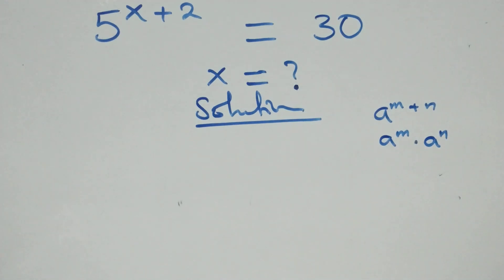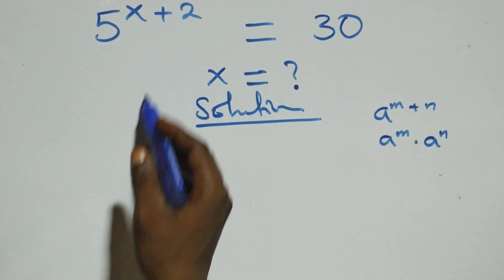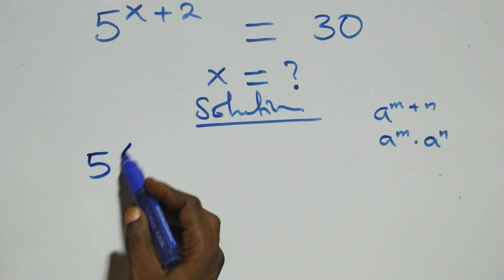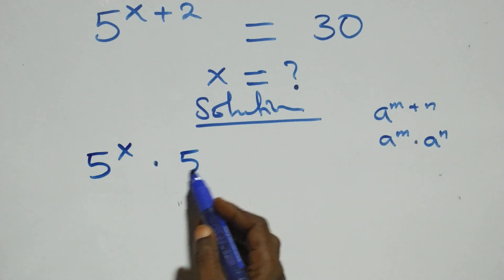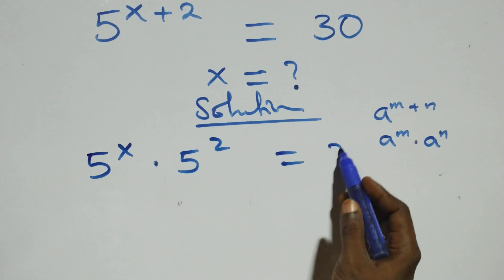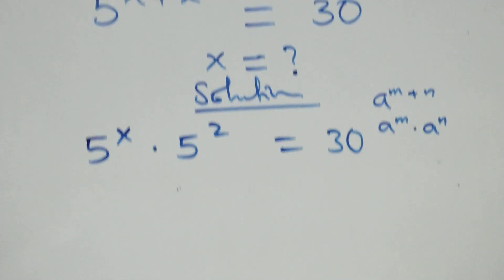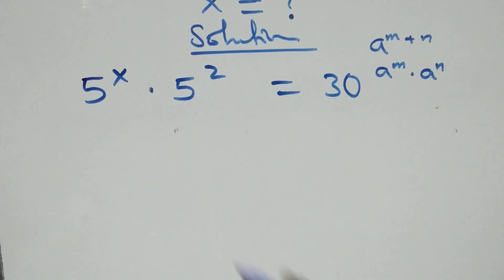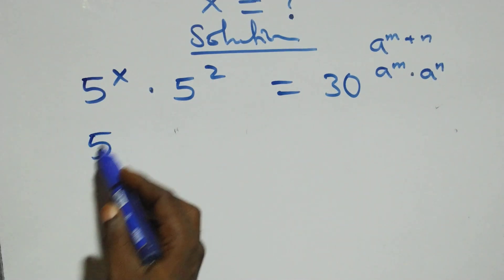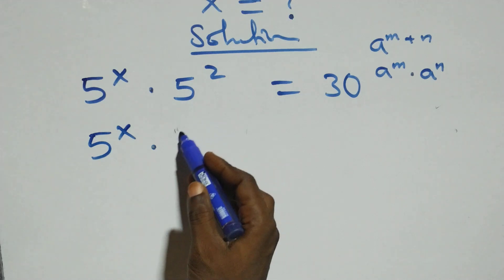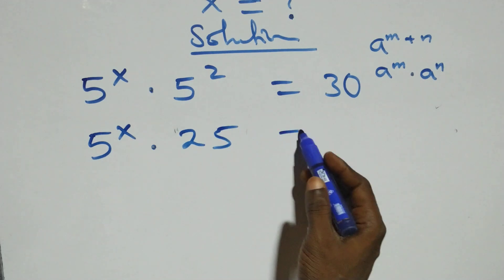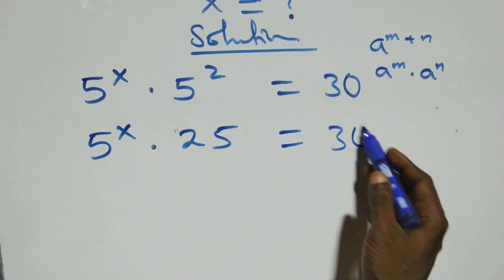At this point here, we can write it as five raised to power x times five squared equals to thirty on this side. The next step here, the same thing as five raised to power x times five squared — that's 25 — and equals to thirty from here.